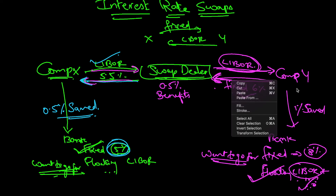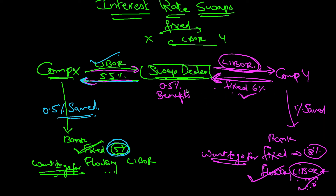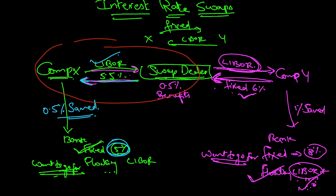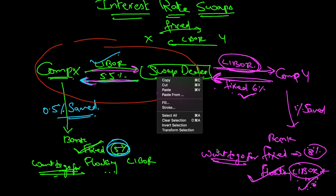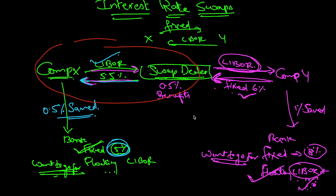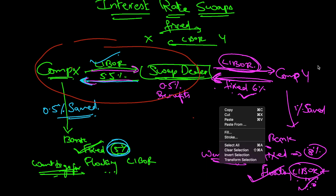So it helps all participants — Company X, the swap dealer, and Company Y. Normally when we are taught interest rate swaps, we are only shown one part of the story: one party entering into an agreement with another, one pays fixed and receives floating. This is the complete picture of how interest rate swaps actually work.